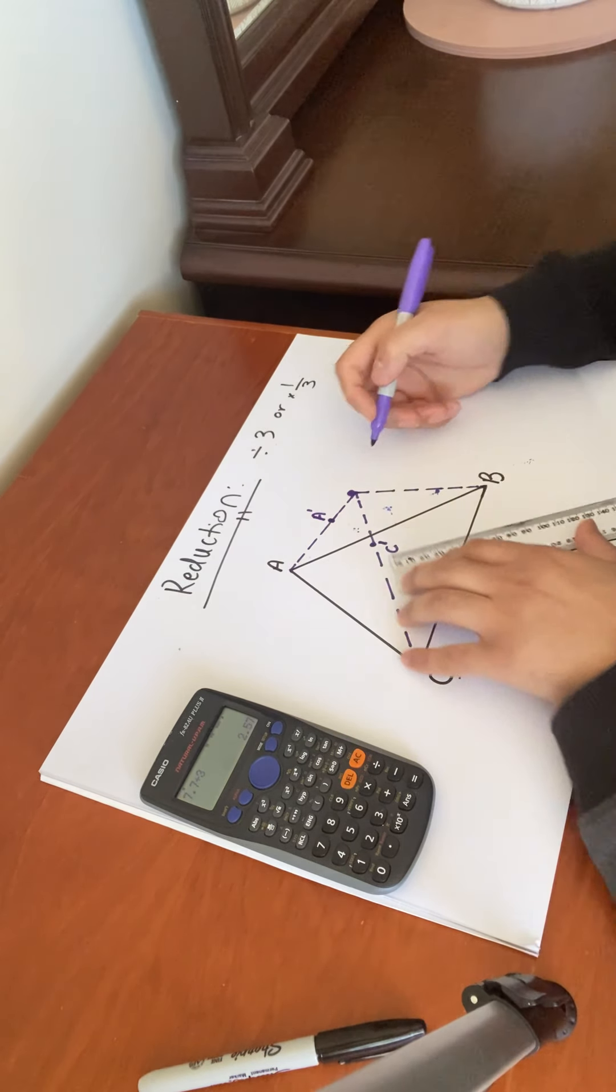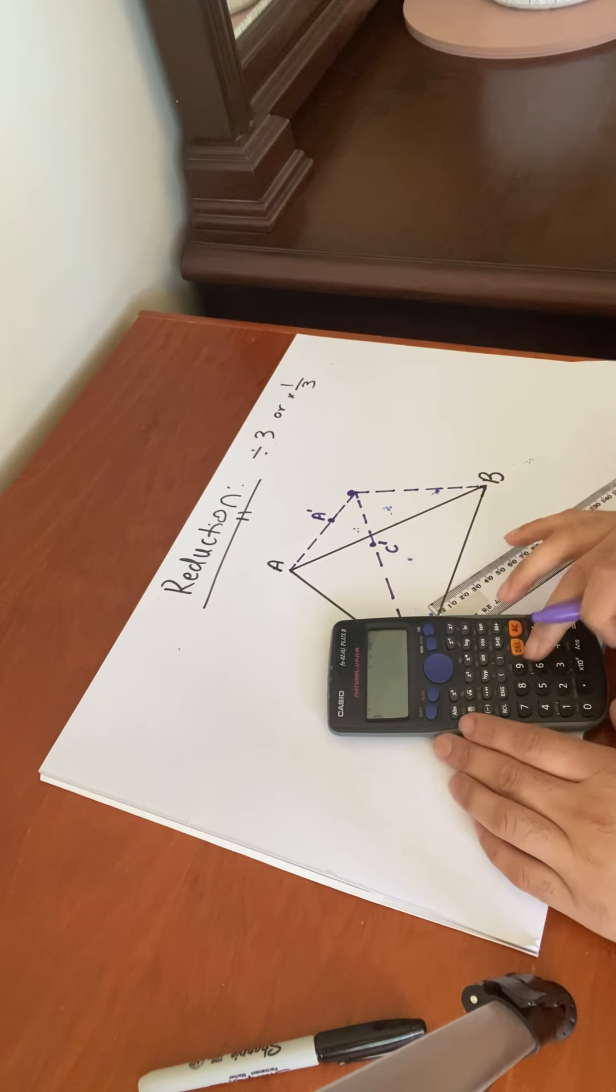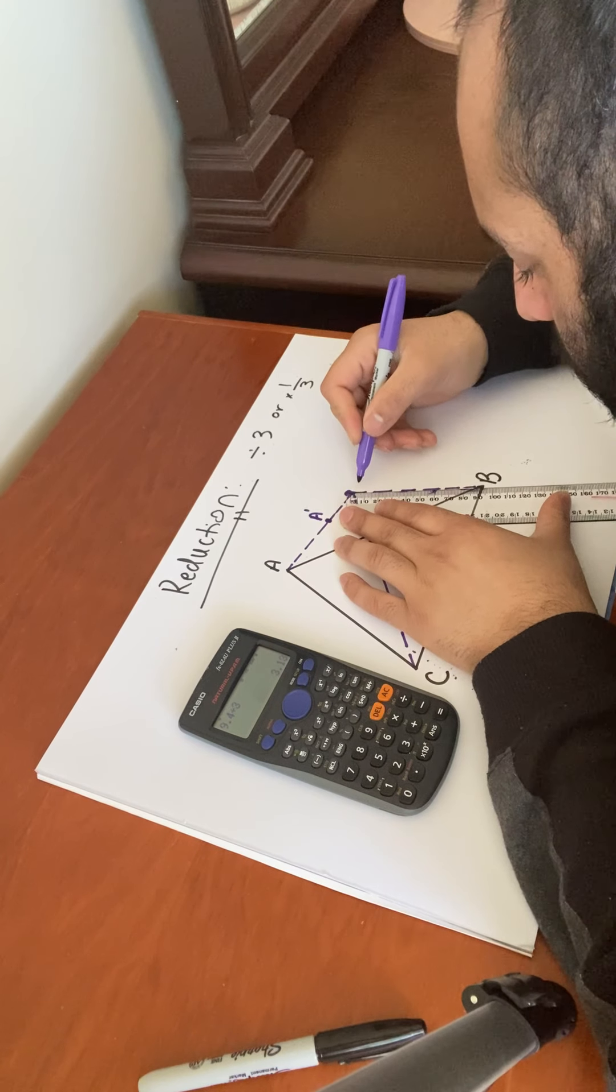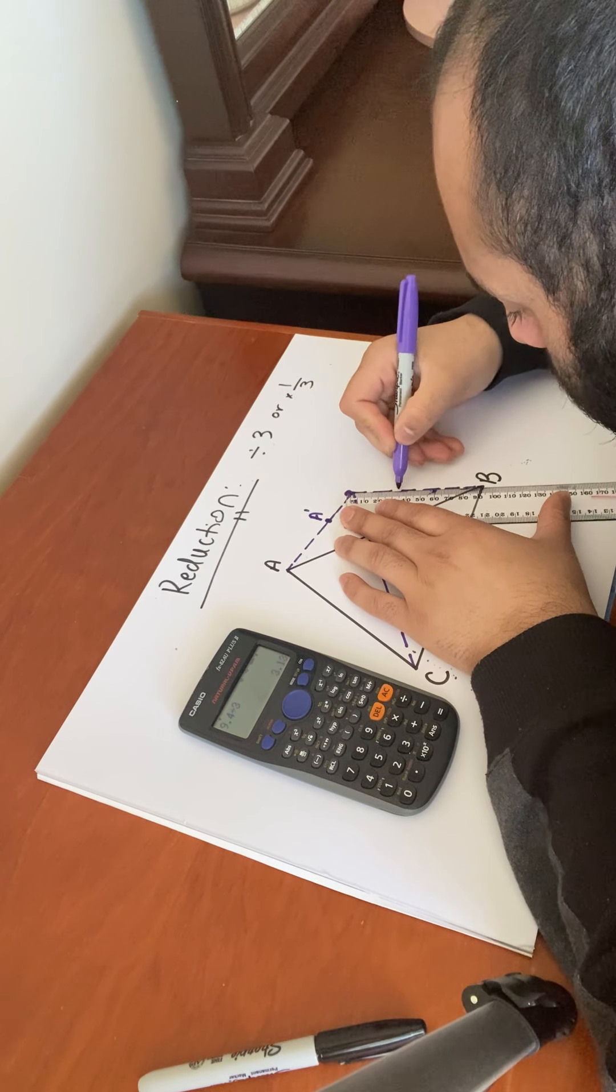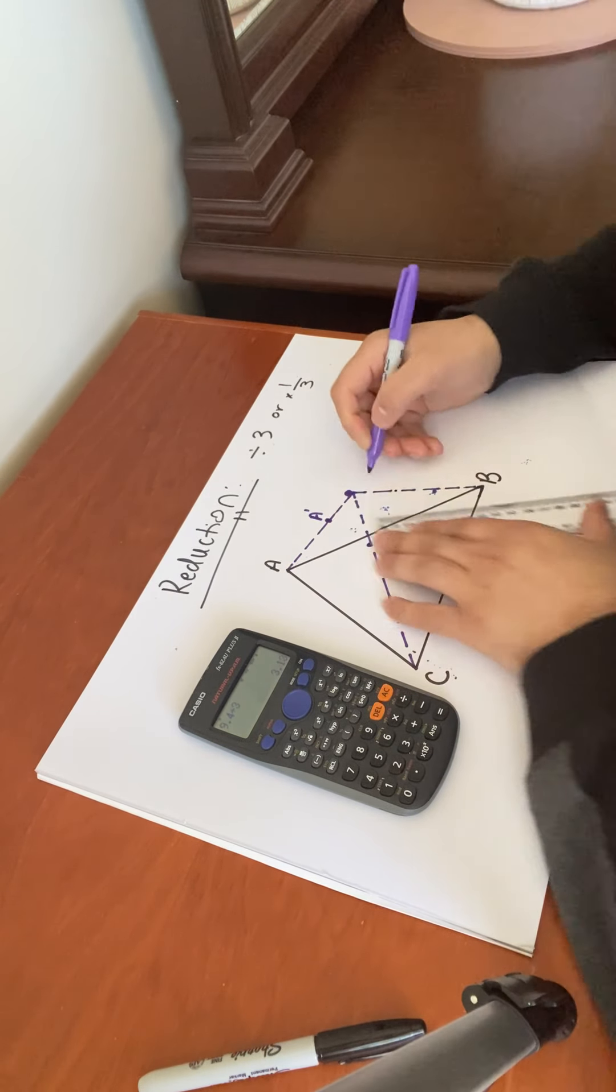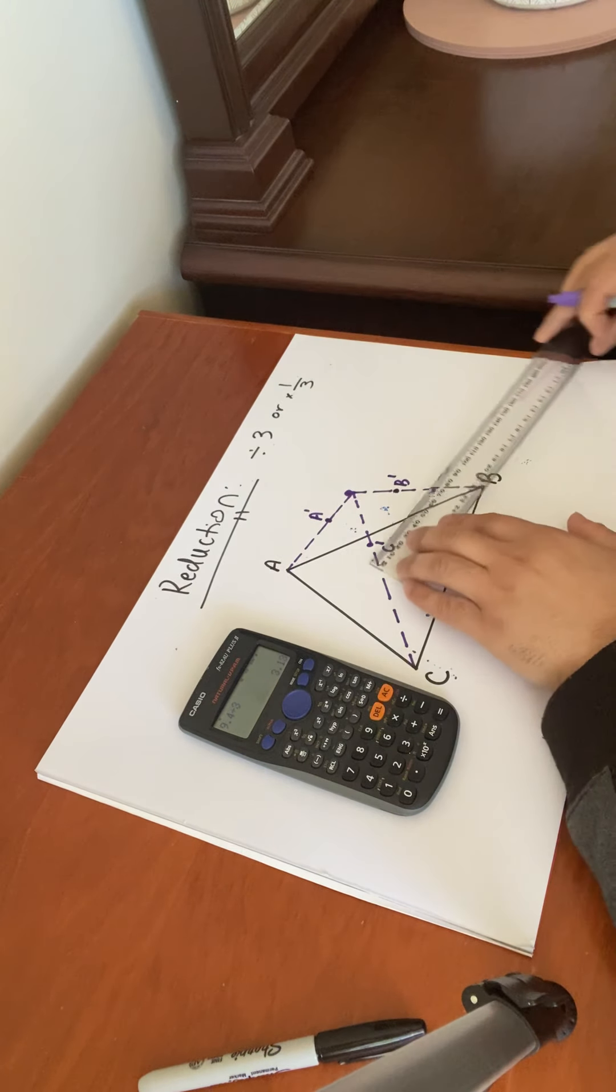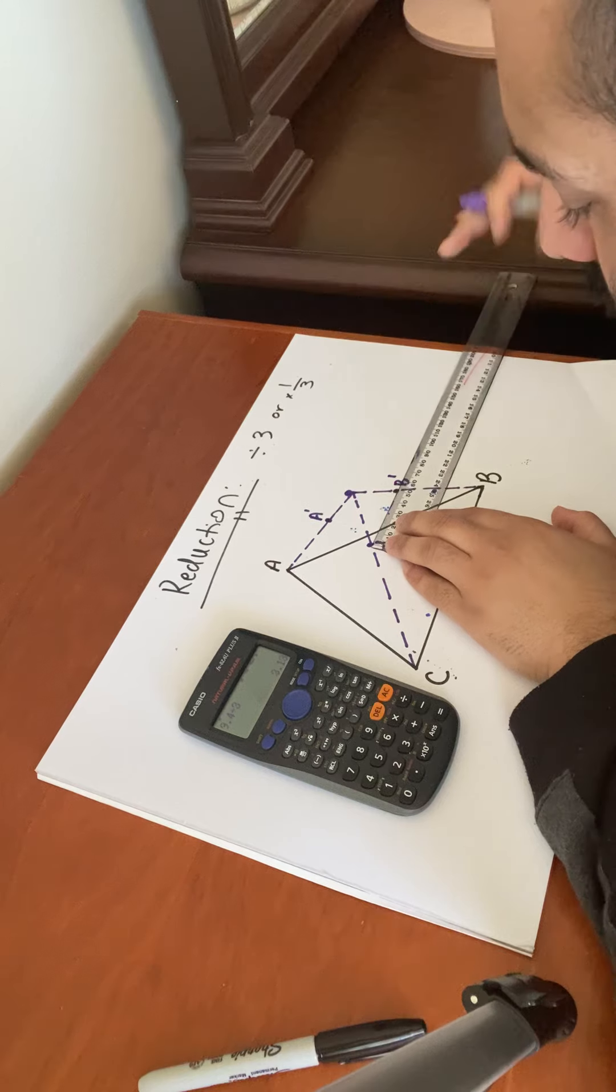9.4 centimeters. Very odd numbers. 9.4 divided by three is 3.13 centimeters. We measure from the origin. 3.13 is about up here, B dash. Okay, now just join the points together, the new points that have been created.